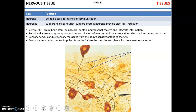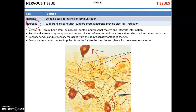Nervous tissue: neurons are excitable cells that play the major role in transmitting information and communication between different parts of the body. Then there are neuroglial cells. Neuroglia provide support for neurons — you can see neurons and the dark dots are nuclei of neuroglial cells. They support neurons, provide electrical insulation, protect them against microorganisms, and make sure the concentration of electrolytes is proper.